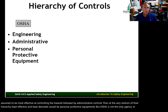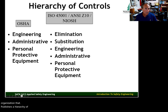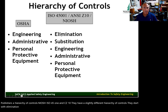OSHA is not the only agency that publishes a hierarchy of controls. NIOSH, ISO 45001, and ANSI Z10 have a slightly different hierarchy. They start with elimination as most effective, followed by substitution, engineering, then administrative controls and personal protective equipment.